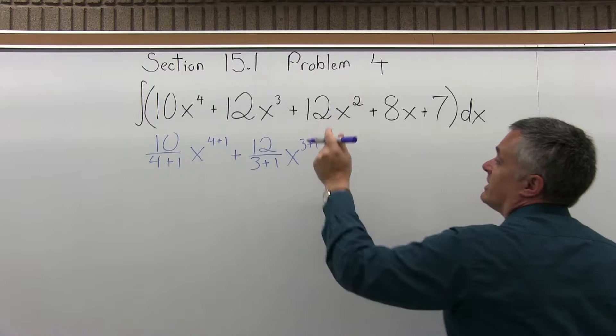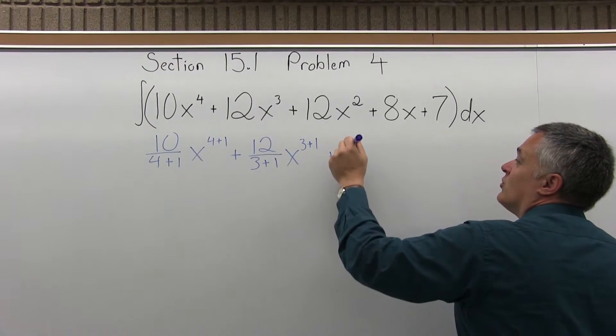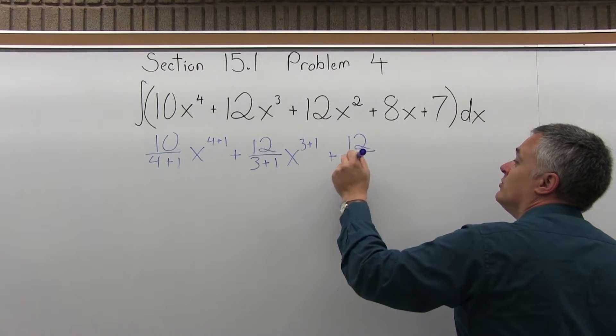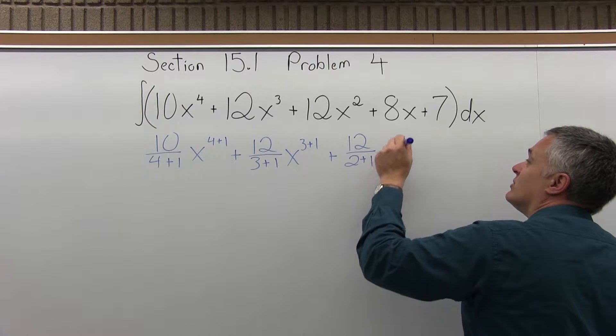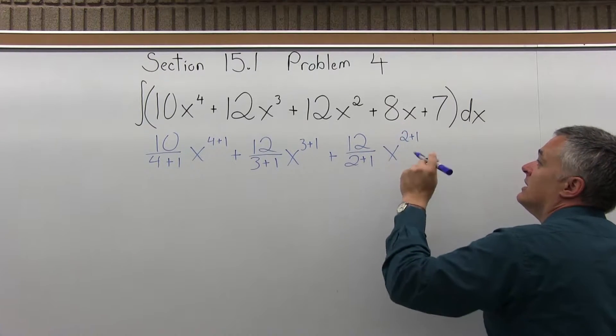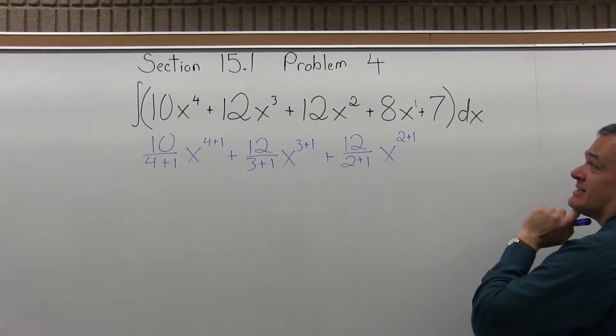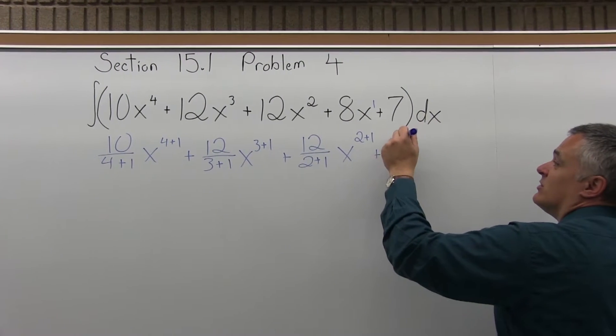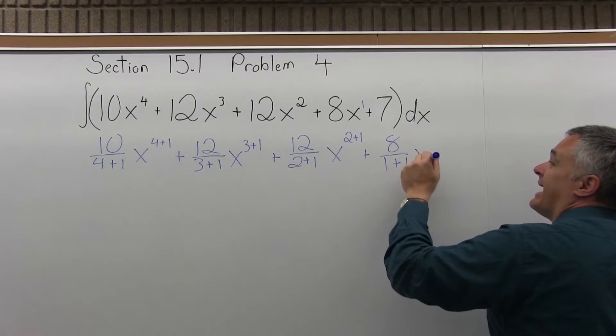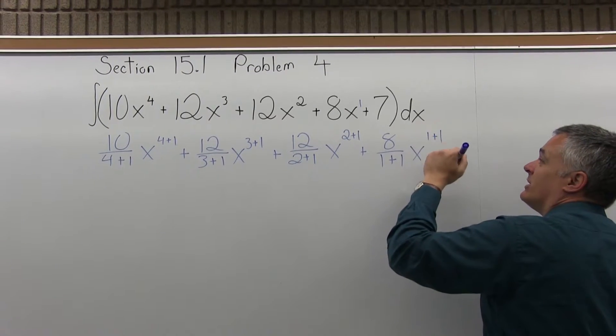Then the 12x squared, I'm going to do 12 over 2 plus 1, x to the 2 plus 1. And then plus 8x, so assume that is an 8x to the 1st. So I'm going to do 8 over 1 plus 1, x to the 1 plus 1.